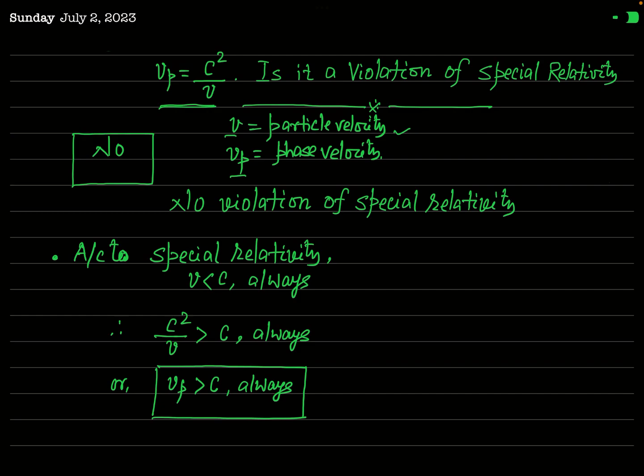Seeing this result, a question definitely arises in our mind. According to the special theory of relativity, the speed of a particle v is always less than c, where c is the speed of light in free space. As v is always less than c, so c²/v will be greater than c. And since c²/v is the measure of vp, the phase velocity of the matter wave, vp must always be greater than c.